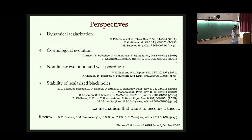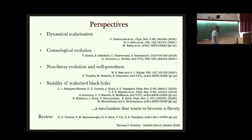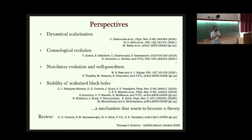Another topic is dynamical scalarization. I've talked about a single object in a stationary state, where scalarization depends on the object's properties. But consider a binary: as the binary evolves, the binary becomes more compact and spins faster, so the scalar field configuration changes. You could start with unscalarized objects and scalarize the binary, or start with scalarized objects that lose their charge during merger. People are also creating parameterizations to probe this in a theory-agnostic way directly with gravitational waves.